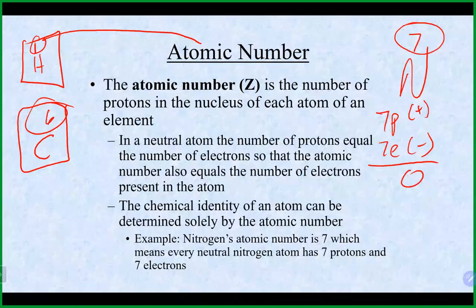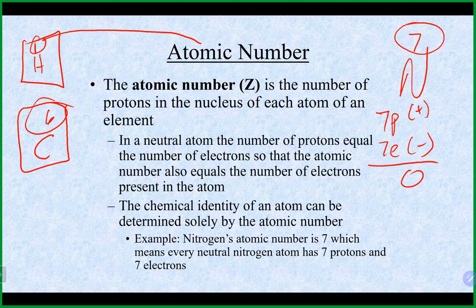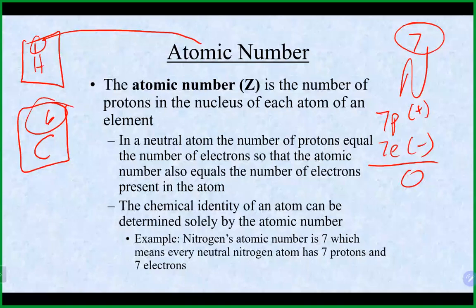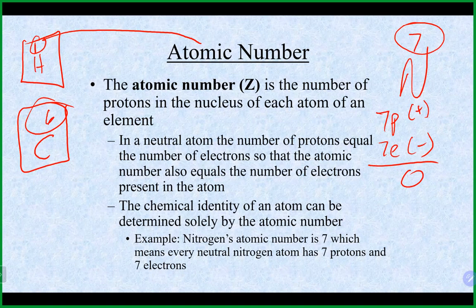Looking at the periodic table numbering: element 57 is lanthanum, and those elements that should go right there make up the lanthanide row. Element 89 is actinium — the same situation for the actinide row. Technically, those two rows should go right in that spot, pushing everything else to the right. So atomic number 57 would be lanthanum and 71 would be lutetium.